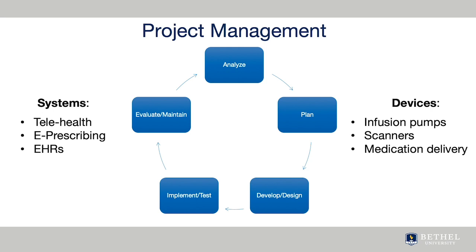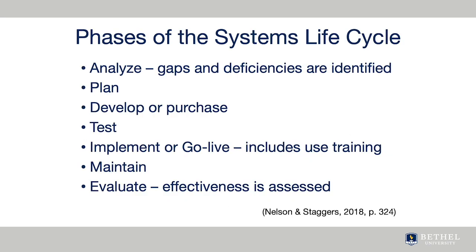The steps of upgrading an information system or technology are similar to the steps of project management. In the analysis phase, deficiencies are noticed and new user requirements are outlined. In the planning and developing phase, the actual design or purchase is done. In the testing phase, the details are worked out. In the implementation phase, the product is installed and the users are trained.